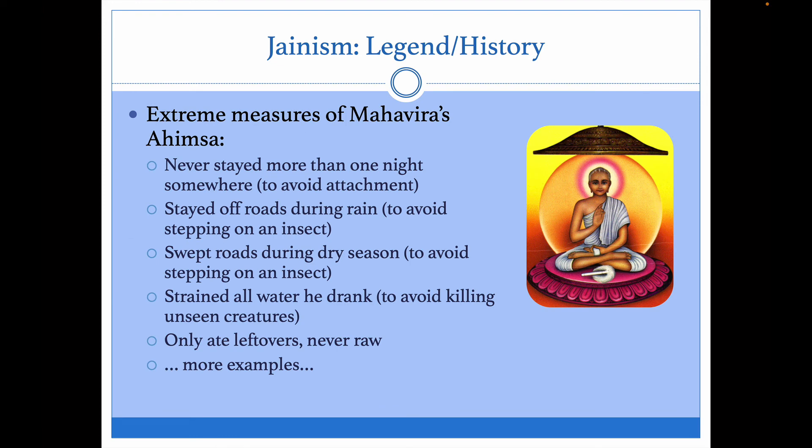Here's how far the Mahavira went with his ahimsa, or nonviolence: he never stayed more than one night in one place to avoid attachment. He stayed off the roads when walking during the rain because he didn't want to step on an insect — insects get carried along with water. He swept the roads during the dry season to avoid stepping on an insect. He strained every bit of water he drank to avoid killing unseen creatures in the water. He only ate leftovers and never ate raw food, since raw food might contain creatures not yet killed.